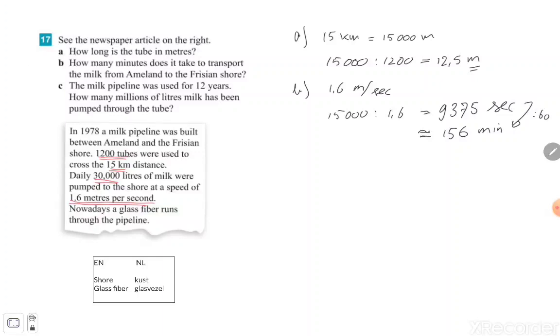All right, exercise C: The milk pipeline was used for 12 years. How many millions of liters of milk has been pumped through the tube? Now they told us that daily, 30,000 liters of milk were pumped to the shore. So what we want to know is: how many days is 12 years? That's question number one.